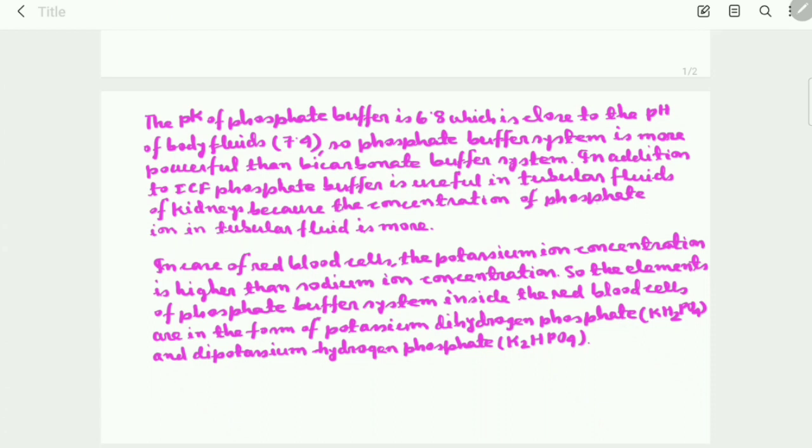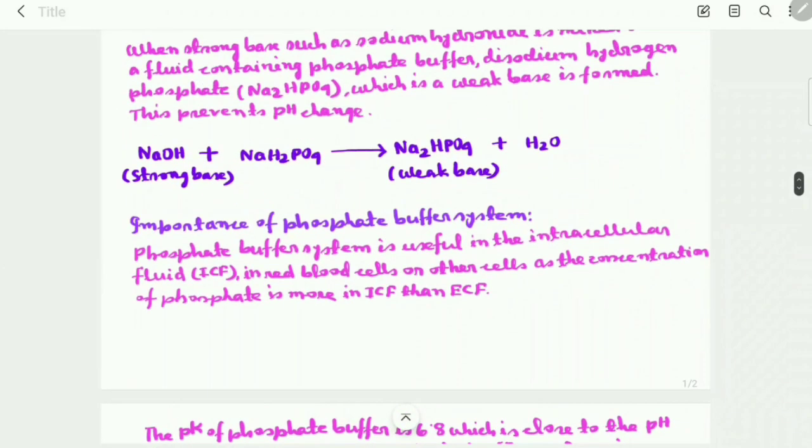The concentration of phosphate ion in tubular fluid is more. In case of red blood cells, the potassium ion concentration is higher than sodium ion concentration. So the elements of phosphate buffer system inside red blood cells are in the form of potassium dihydrogen phosphate KH2PO4 and dipotassium hydrogen phosphate K2HPO4.